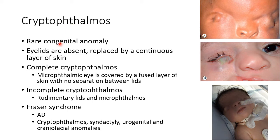Now let us discuss about cryptophthalmos. It is a rare congenital anomaly in which the eyelids are absent and replaced by a continuous layer of skin. There are two types: complete cryptophthalmos, and incomplete cryptophthalmos. In complete cryptophthalmos, a microphthalmic eye is covered by a fused layer of skin with no separation between lids, as shown in this picture. In incomplete cryptophthalmos, there are rudimentary lids and microphthalmos, as shown in this picture.